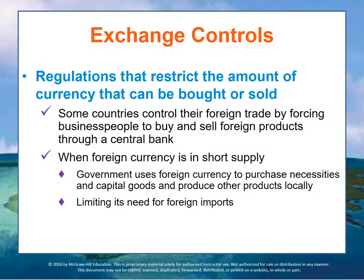Exchange controls are regulations that restrict the amount of currency that can be bought or sold. Some countries control their foreign trade by forcing business people to buy and sell foreign products through a central bank. When foreign currency is in short supply, as it is in many less developed countries, the government uses foreign currency to purchase necessities and capital goods and produces other products locally, thus limiting the need for foreign imports.